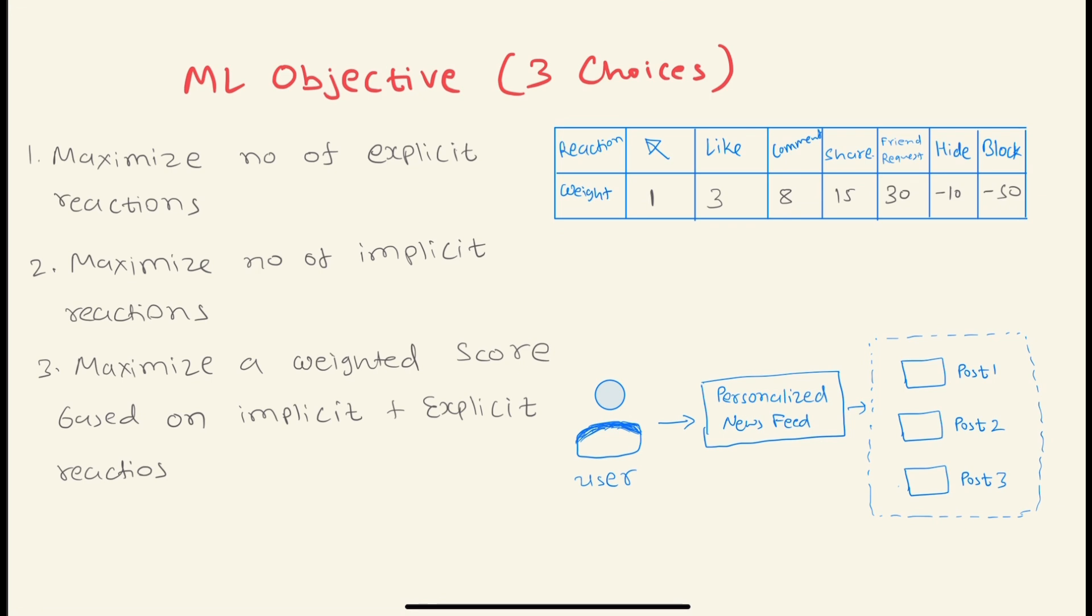We have to map the business problem with the ML problem. We need to figure out what the ML objectives are. We can see we have three objectives: either we maximize number of explicit reactions, or implicit reactions, or we can combine both of them and consider some kind of weighted score. For example, we can consider reactions like click, like, comment, share, friend request, hide, and block, and for each one we give some weight.